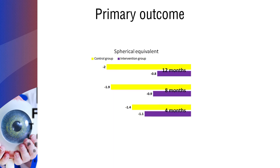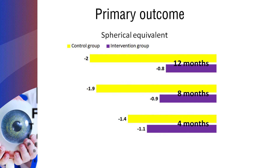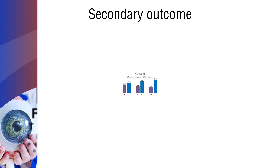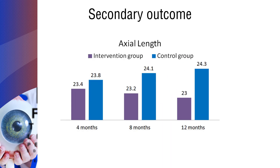The primary outcome of the study was myopic progression, measured by spherical equivalent, considering the baseline measurements. The spherical equivalent in the intervention group reduced gradually from minus 1.1 to minus 0.8. The secondary outcome was measured by axial length, and the intervention group showed a significant decrease in the axial length.